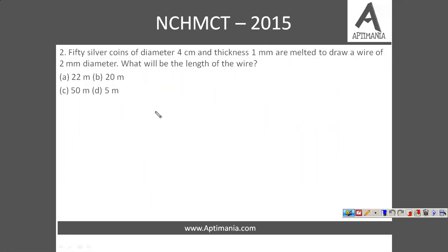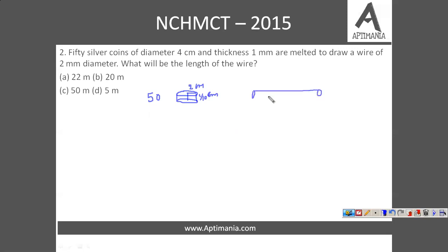Moving to the next question: 50 silver coins of diameter 4 cm, so radius will be 2 cm, and thickness 1 mm. The coin is in the form of a cylinder, and thickness represents the height of the cylinder. The thickness is 1 mm or 1/10 cm. We will keep all units in cm only. These are melted to draw a wire, and a wire is also a cylindrical figure.